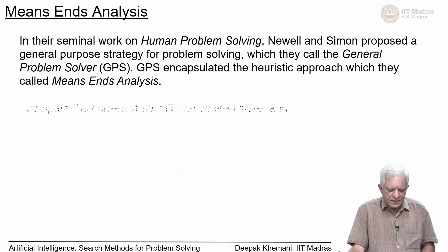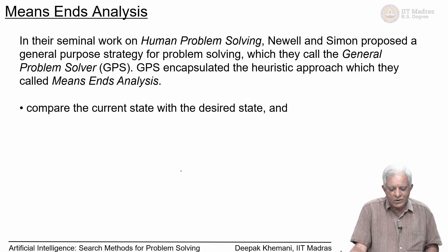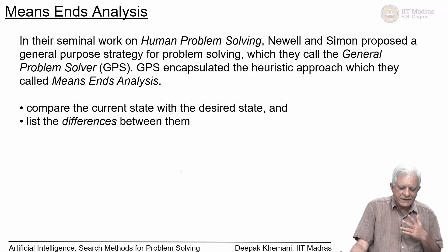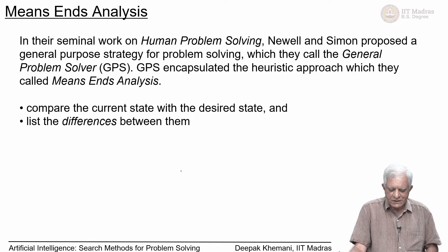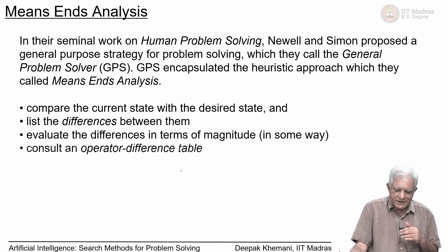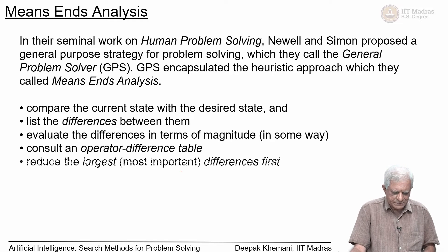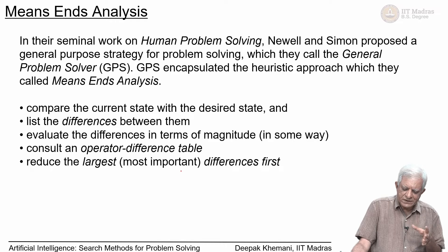In means-ends analysis, you compare the current state with the desired state, taking a global view. You list the differences between the current state and the desired state — there may be more than one difference. You evaluate the differences in terms of magnitude, identify the largest difference and smaller differences, and then address the largest differences first. This can be done using something called an operator-difference table, which lists available operators and what differences they address.